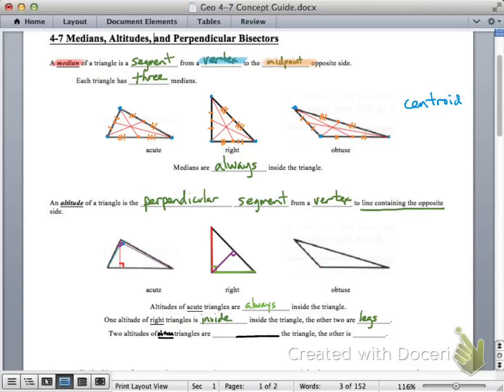The two altitudes of obtuse triangles, well, we'll have to actually extend one of the lines in order to draw a segment that is perpendicular to one of the sides. That's why our definition says the line containing the opposite side. So you'll notice the red one and the green one that I've drawn here, those two are outside the triangle, and then finally there's one that is inside. So we end up with two altitudes that are outside the triangle, and then a third that is inside.